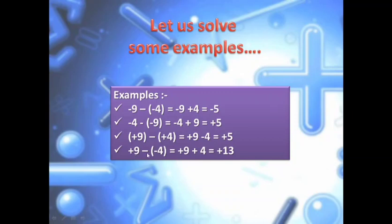Next: 9 minus minus 4. I have to change the sign of minus 4 — whichever number appears after the subtraction sign, change only that number's sign. So minus 4 becomes plus 4. Plus 9 is written as it is. Since both numbers now have the same sign, I directly add: 9 plus 4 is 13. The common sign is plus. So the answer is plus 13.